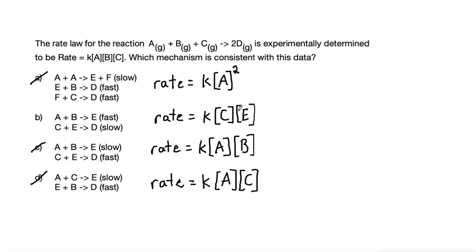So the way we can do that is by writing in our fast reaction, we can write our K_eq, our equilibrium constant. Because this is fast, we can assume that it's going to be in an equilibrium state. And so if we write the products over the reactants, that would be the concentration of E divided by the concentration of A and B on the bottom.